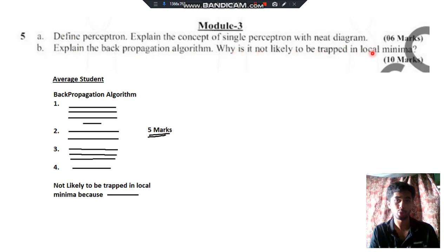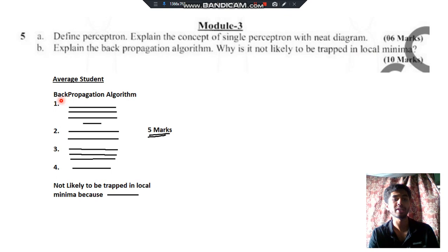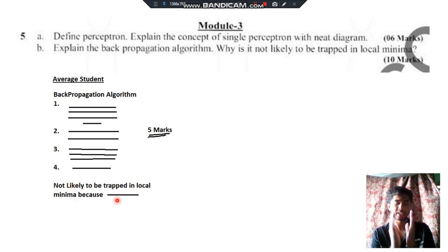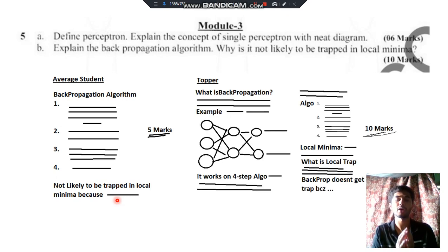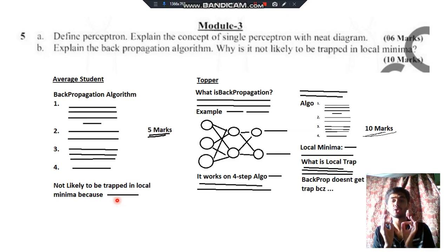We're supposing that you know the answer well. What does an average student do? They will write 'backpropagation algorithm,' write the four-step process it involves, then write 'not likely to be trapped in local minima' — just that much, nothing more. The examiner will give only as many marks as they want to for that content. The change you have to bring is: even if you've been asked a very straightforward question, you have to elaborate it in your own words.